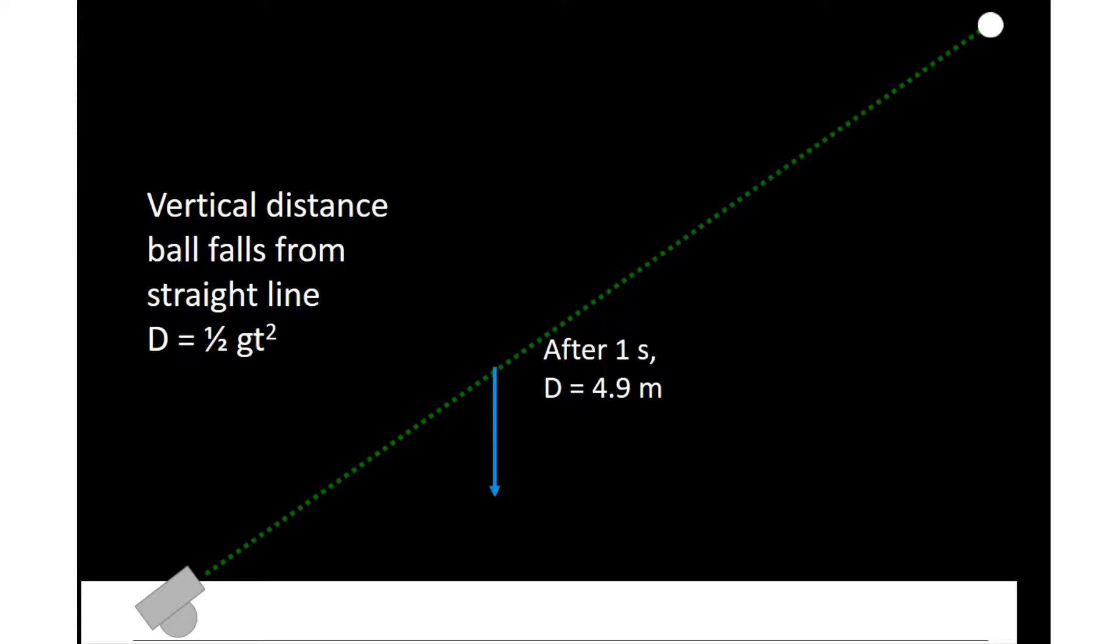So its motion is going to deviate from that straight line by one half g t squared. After one second, the cannonball will find itself 4.9 meters lower than the straight line that it would have if there were no other forces. After the second second, it's 19.6 meters lower. And what you wind up with is that parabolic arc.